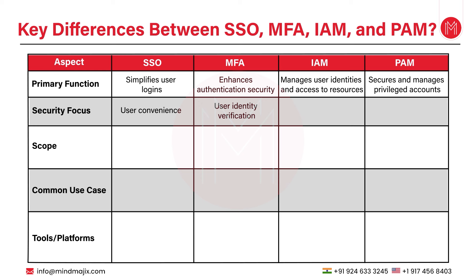IAM's security focus is on centralized access control, ensuring users only have the permissions they need to perform their jobs, thereby reducing the chances of insider threats or unauthorized access. PAM's security focus is on protecting high-level privileged accounts. Since privileged accounts have access to critical systems, they are often the primary target of cyber attackers. PAM ensures these accounts are closely monitored and controlled, and that elevated permissions are granted only when absolutely necessary.